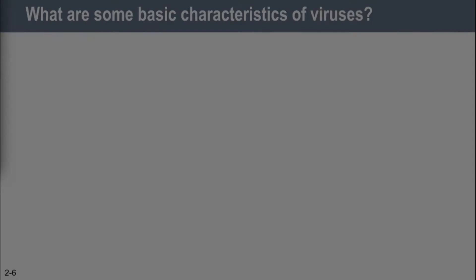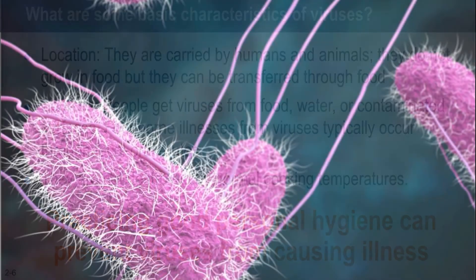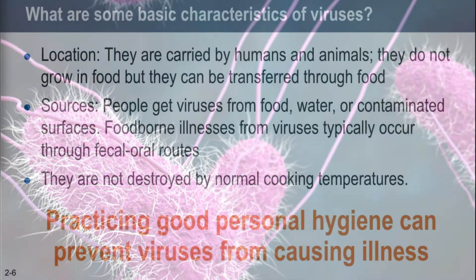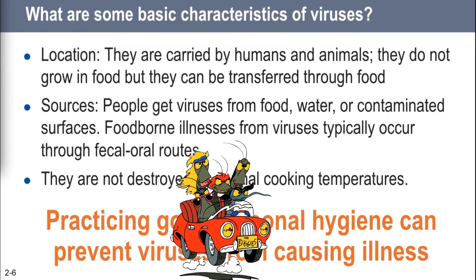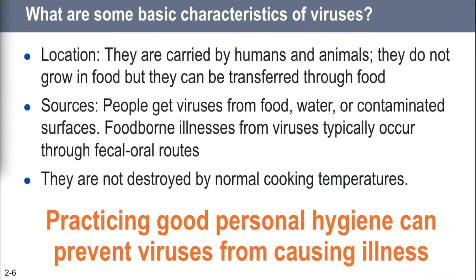Viruses are kind of like bacteria — they're on you — but they don't grow in food. They're not multiplying in food like bacteria do. They treat food like an Uber: just a way to get from one place to another. People get viruses from food, water, or contaminated surfaces. Foodborne illnesses from viruses typically come through the fecal-oral route. They're not destroyed by cooking temperatures or by freezing. The only way to stop viruses is by practicing good personal hygiene — wash your hands.